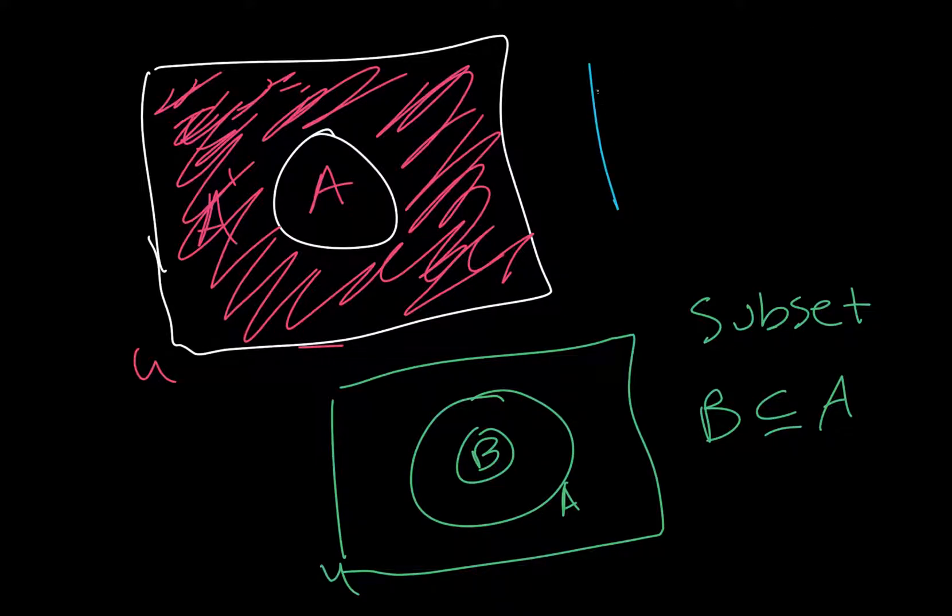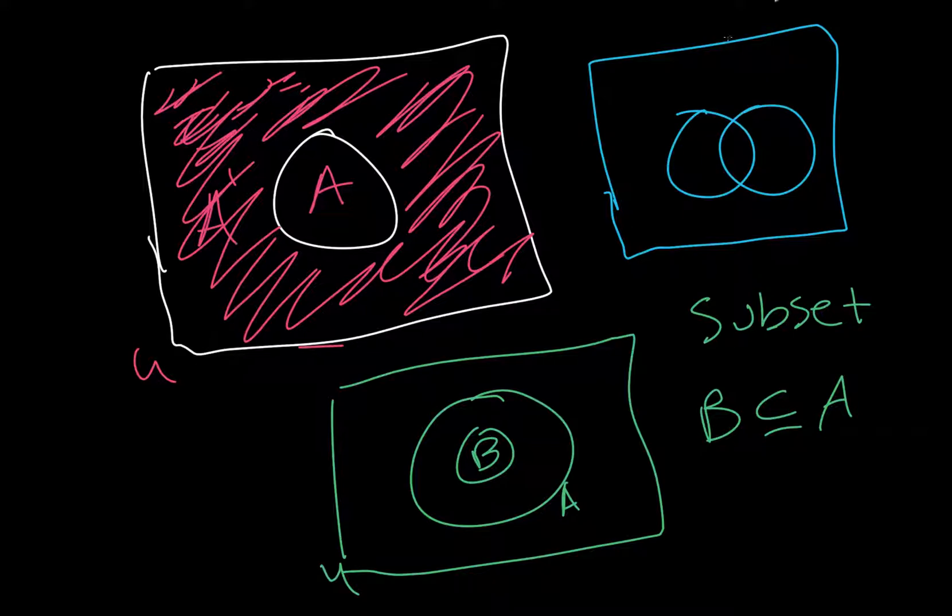Now, this is probably the most common way you've seen a Venn diagram, is when we have two sets that intersect. So, we have set A, set B, and then this section right here is called the intersection. So, it's A intersect B.